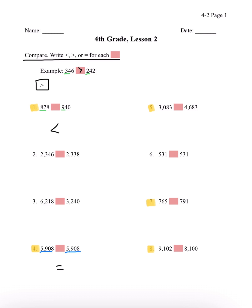Number 5, we have 3,083 and 4,683. A way to figure out if a number is bigger is by looking at the first digit. If they're the same, then you move on to the next digits. The first number here — we have a 3 and a 4 in the 1,000th place. We know that 4 is bigger than 3, so 3,083 is less than 4,683.